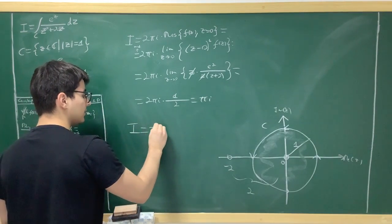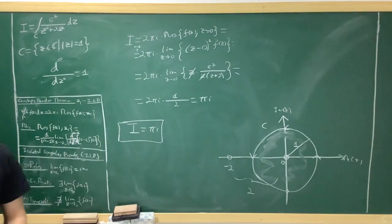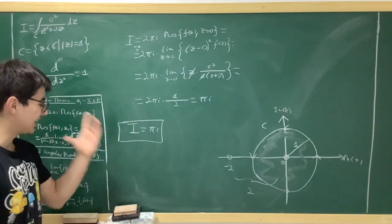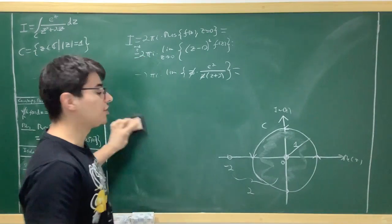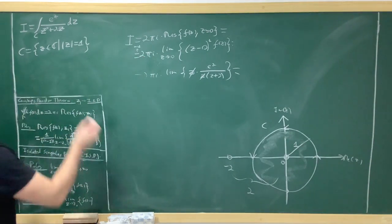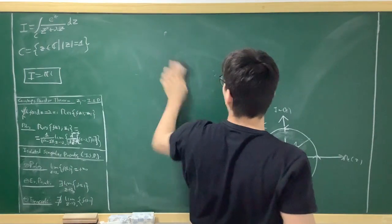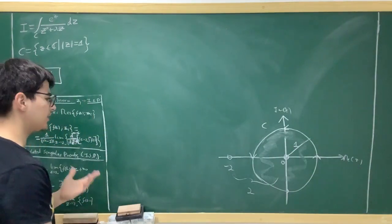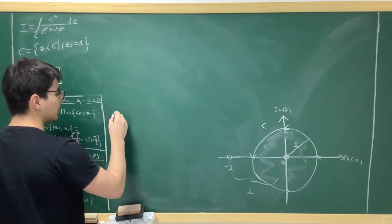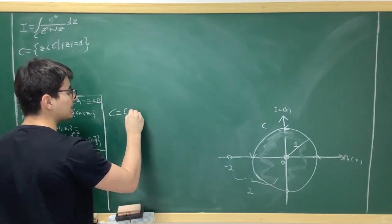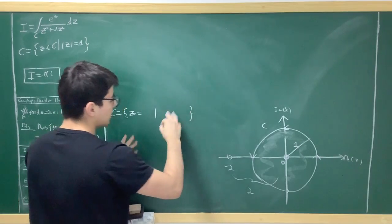The integral, calculated really fast and easily with Cauchy's residue theorem, is πi. Now let's see what would happen if we calculated it using a parametrization — we'll find that the integral is not user-friendly. A parametrization just describes the curve in terms of a parameter. We say c equals something in terms of a parameter, subject to our conditions.